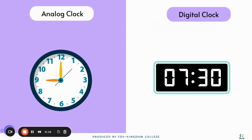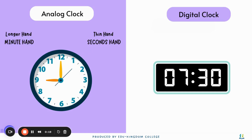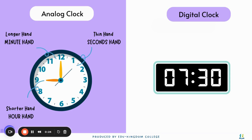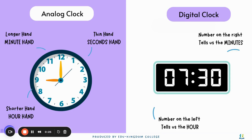In an analog clock, the thin hand is the second hand, the longer hand is the minute hand, and the shorter hand is the hour hand. In a digital clock, the number on the left tells us the hour and the number on the right tells us the minutes.